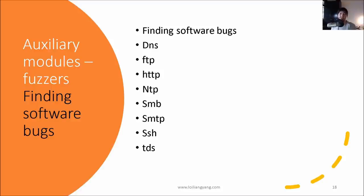Fuzzing auxiliary modules allow us to inject code into services to break past a buffer and find software bugs, similar to SQL injection. Metasploit supports fuzzing for different protocols including DNS, FTP, and HTTP. You push and inject code into those services to find vulnerabilities, though this requires more manual effort in terms of checking those systems or services.